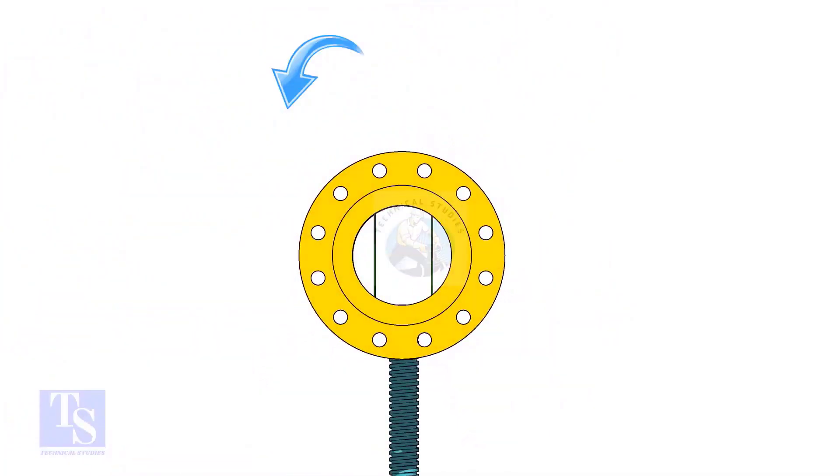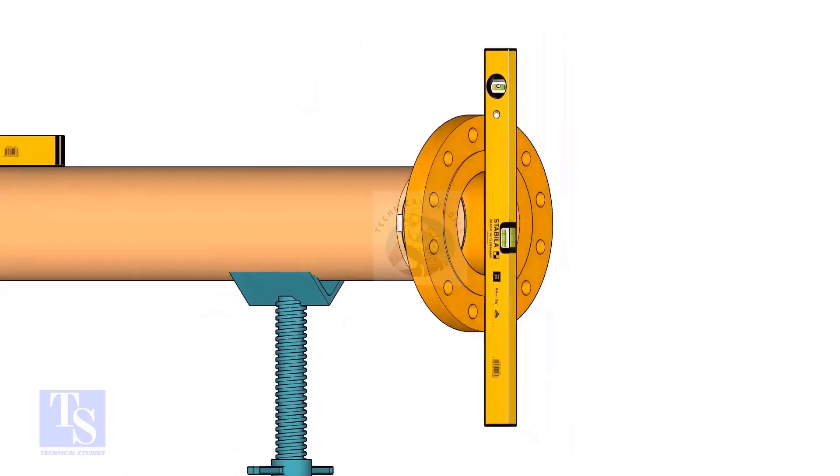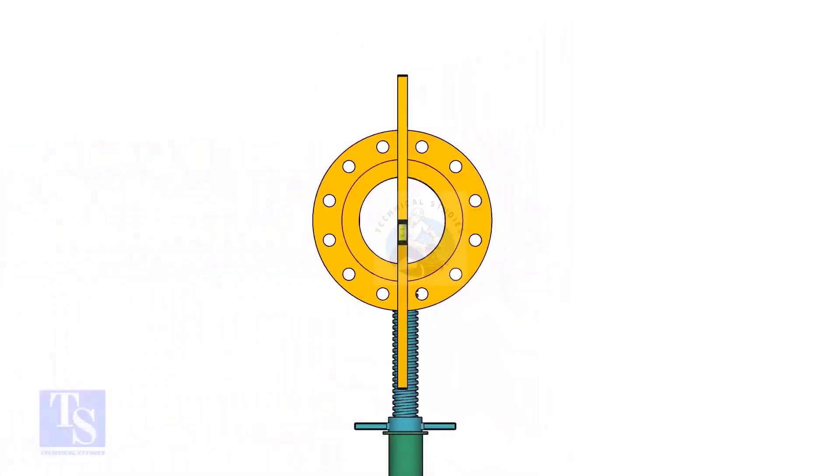Rotate the pipe and flange 90 degrees to either side. Check the vertical level of the flange. If correct, tack weld on the top side of the joint.